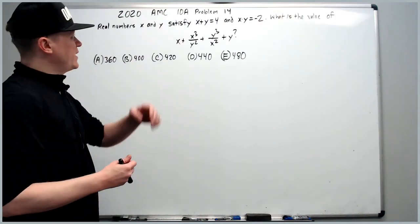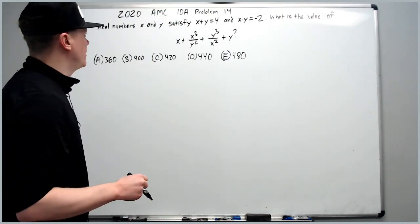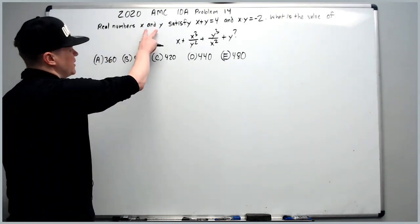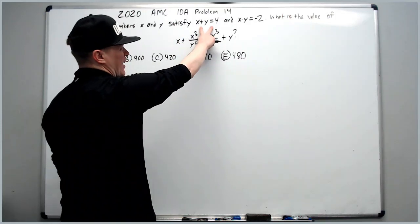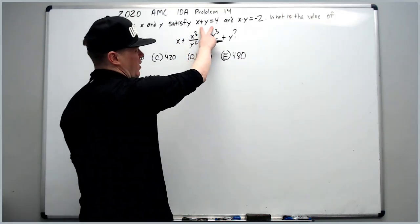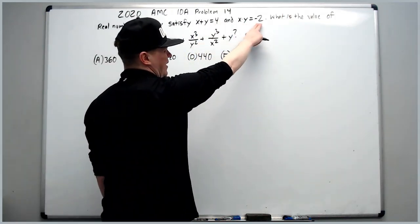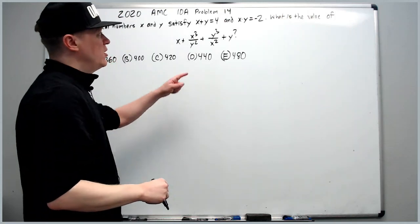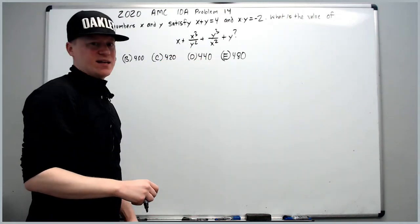And on to the 2020 10A problem 14. Real numbers x and y satisfy x plus y equals 4 and x times y equals negative 2. What is the value of the given expression?